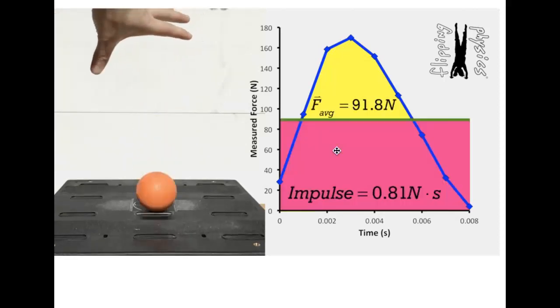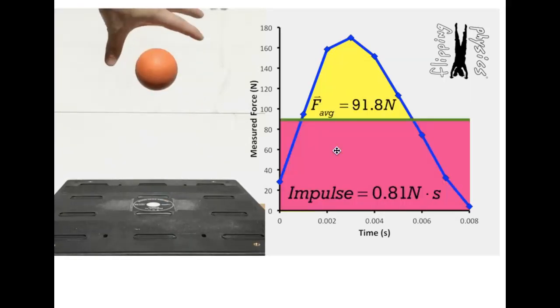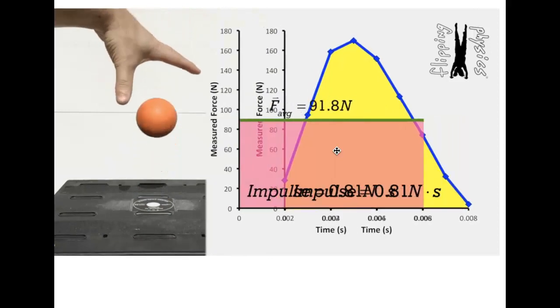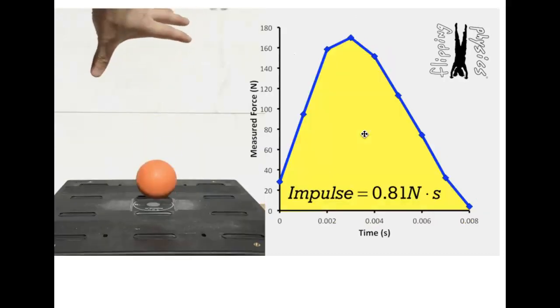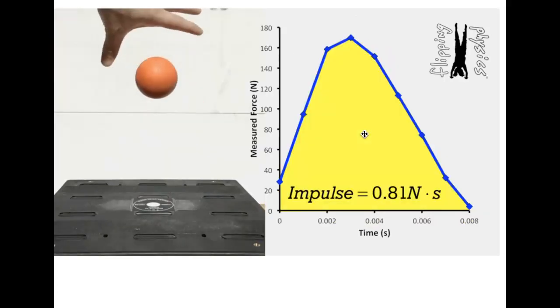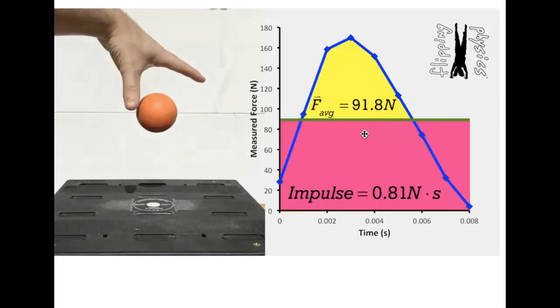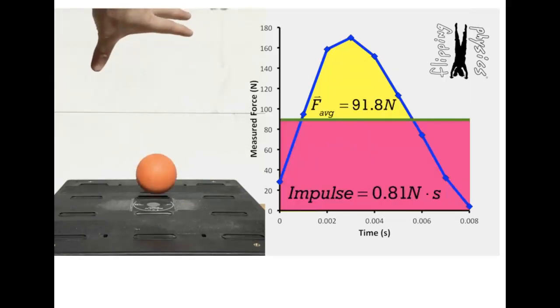So we are going to, just to sum up, use a force-time graph to calculate impulse, and you would do that by working out the area under the graph. I think you have all the information you need now to try the rest of the assignment questions.